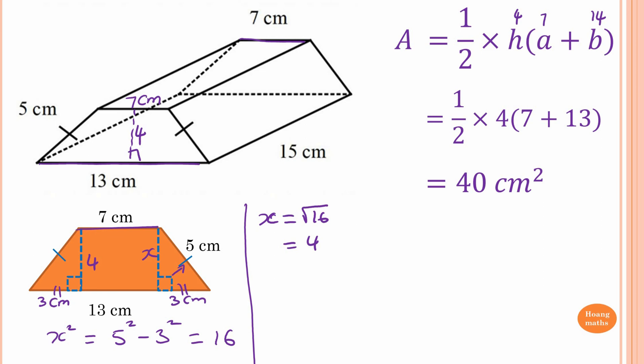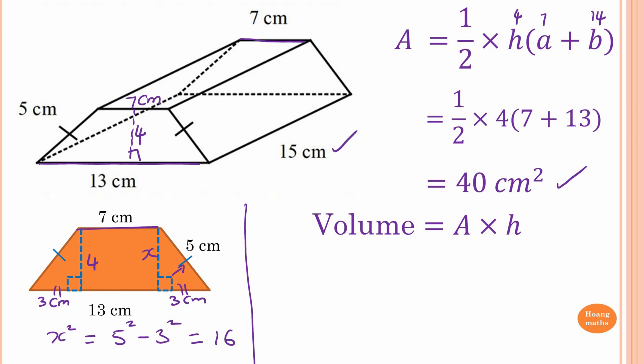Now we know that volume of any prism is area times height. The area is 40 square centimeters, and the perpendicular height of this solid is 15. So 40 times 15 — 4 times 15 is 60 — therefore the answer is 600 cubic centimeters.